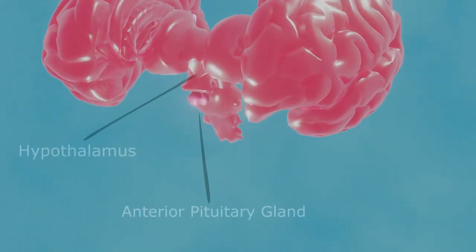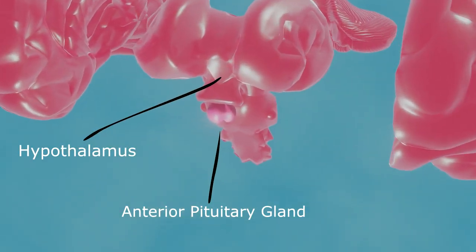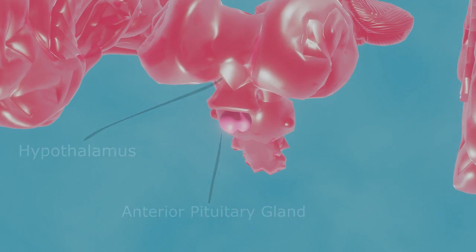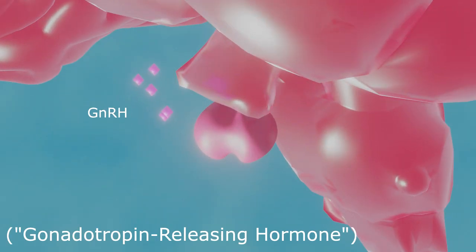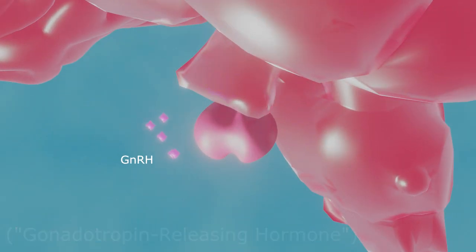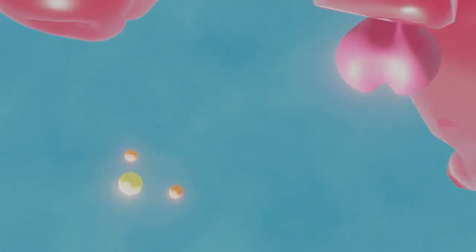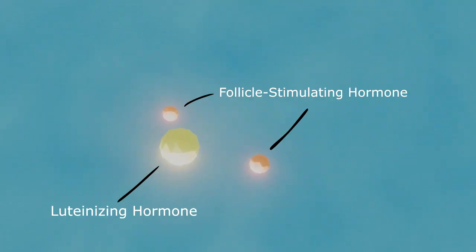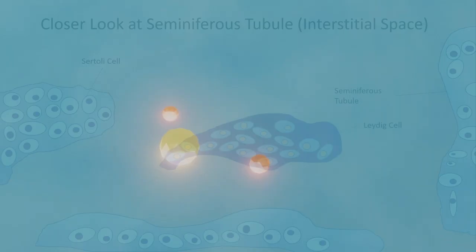When the hypothalamus detects low testosterone levels, it responds by releasing gonadotrophin-releasing hormone, GnRH, which targets the anterior pituitary gland. This results in the anterior pituitary gland producing luteinizing hormone, LH, and follicle-stimulating hormone, FSH. These two tropic hormones will then target the gonads via the bloodstream.